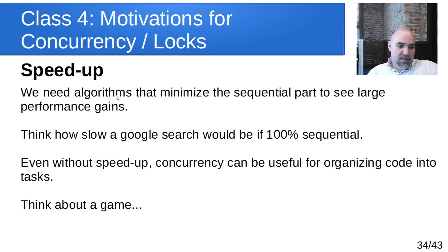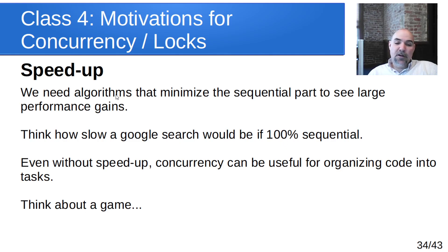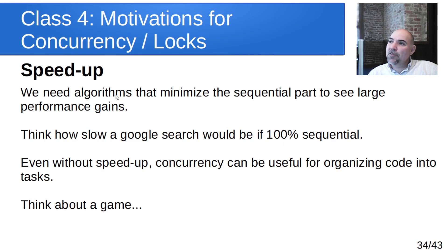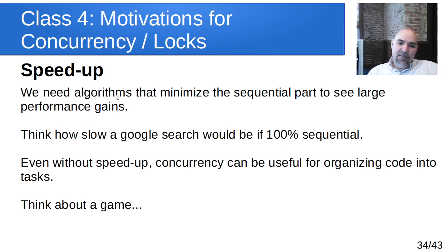The takeaway is that we need algorithms that minimize the sequential part if we expect large performance gains. We need solutions that are more and more concurrent and less sequential. Think of how slow a Google search would be if it were 100% sequential — searching through billions of pages with keyword terms, ranking results, tracking multiple pages of results. You'd ask a question and might not get an answer in your lifetime running purely on one processor.